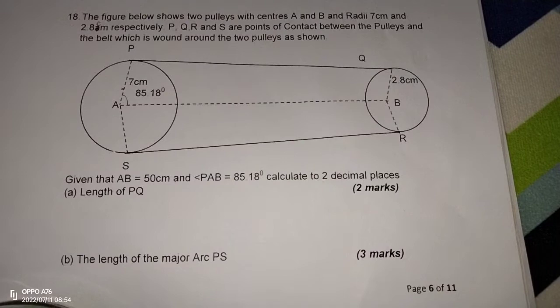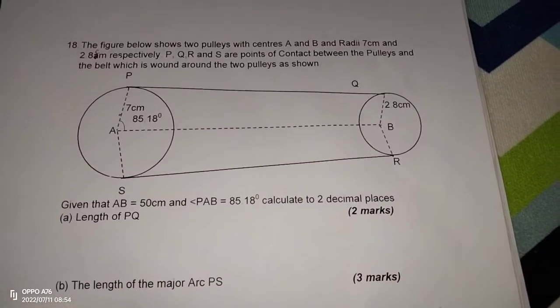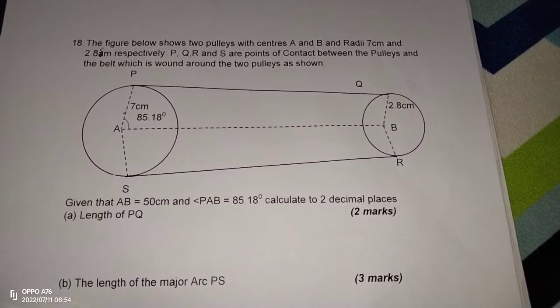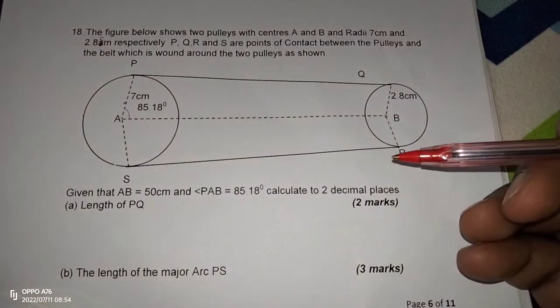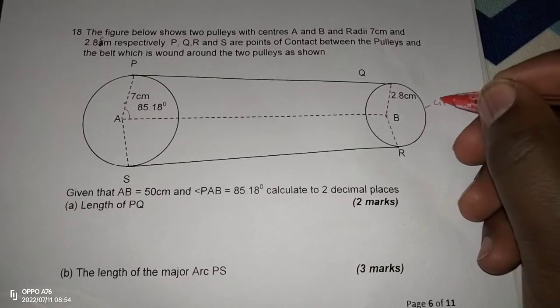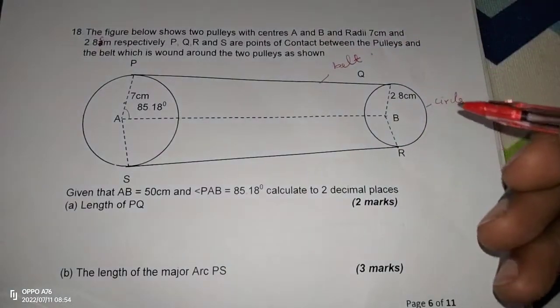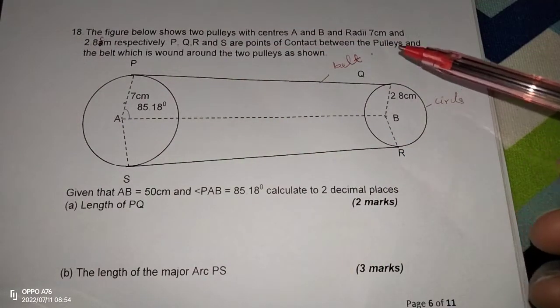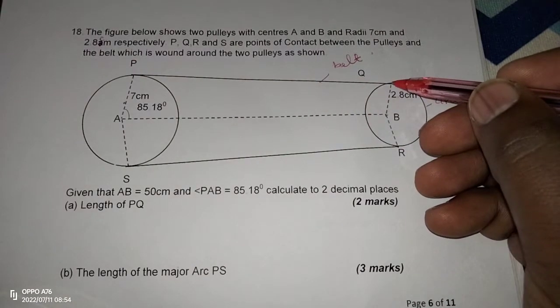So we are going to apply the concepts of circle chords and tangents because these are external tangents to the two pulleys which are acting as circles. The pulleys are acting as circles while the belt which has been wound around is acting as the external tangent because the pulley is just touched by the belt at points P, Q, R and S.